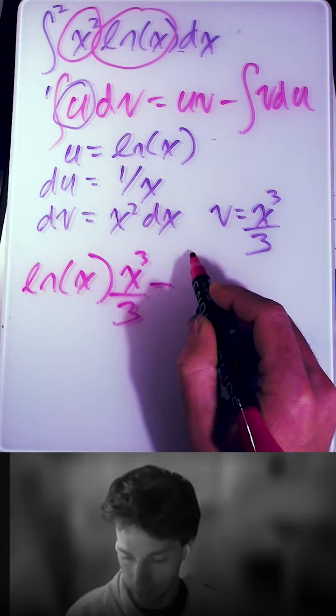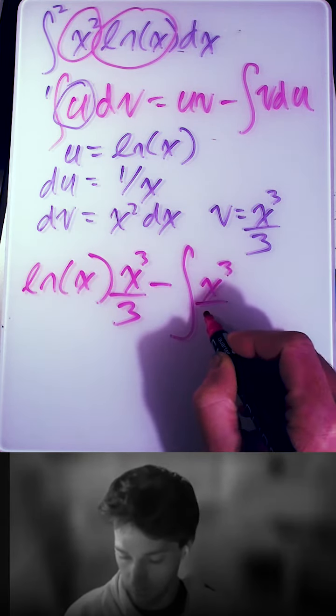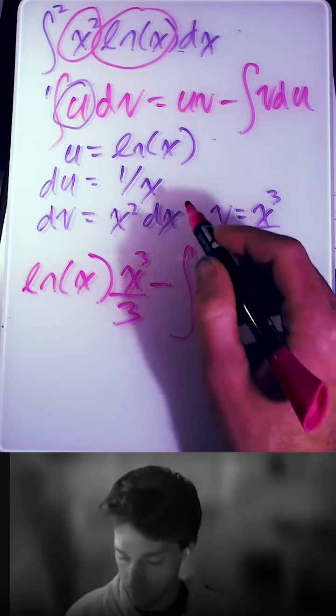minus the integral of v du. And v is x cubed over 3, and du is 1 over x dx.